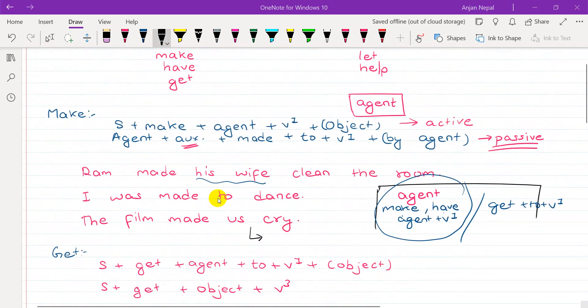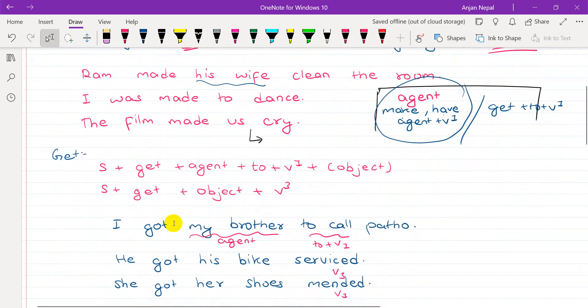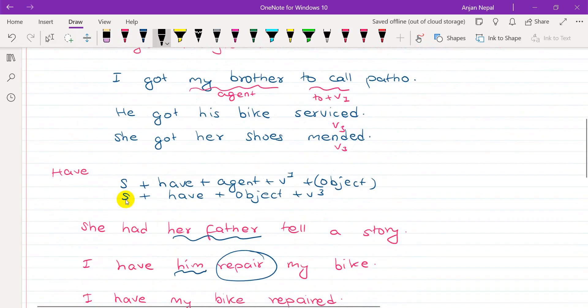So make is used to force or require someone to take action or someone to do something. Get is used to convince someone to do something or to trick someone to do something. Have means you have the authority, you can authorize someone to do something. So not always the case, but this is the meaning of these three.